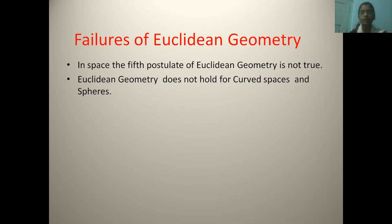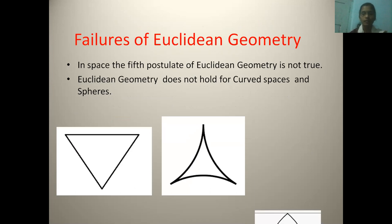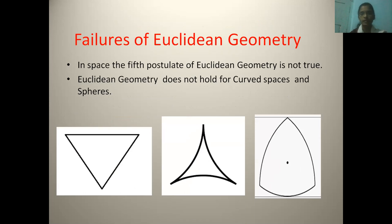Now, failures of Euclidean geometry. In space, the fifth postulate of Euclidean geometry is not true. Euclidean geometry does not hold for curved spaces and spheres. In these three triangles, in first triangle, the sum of angles of the triangle is 180 degrees. In second, it is less than 180 degrees. And in third triangle, it is more than 180 degrees.